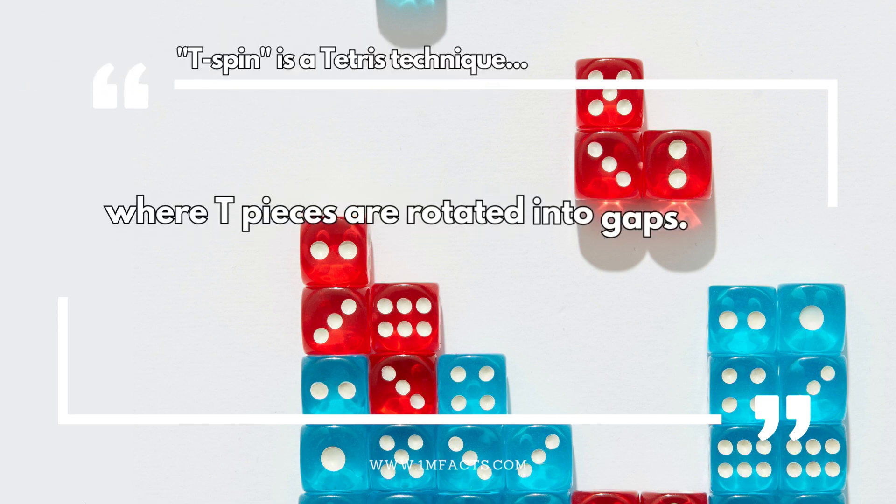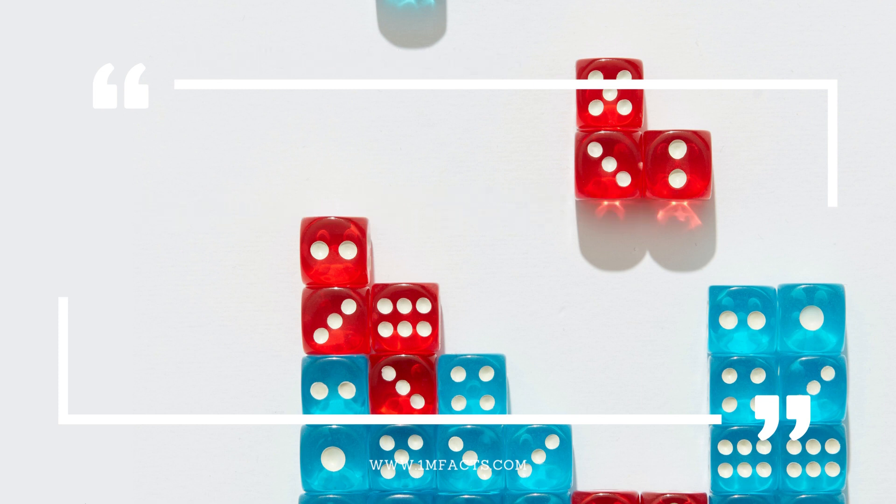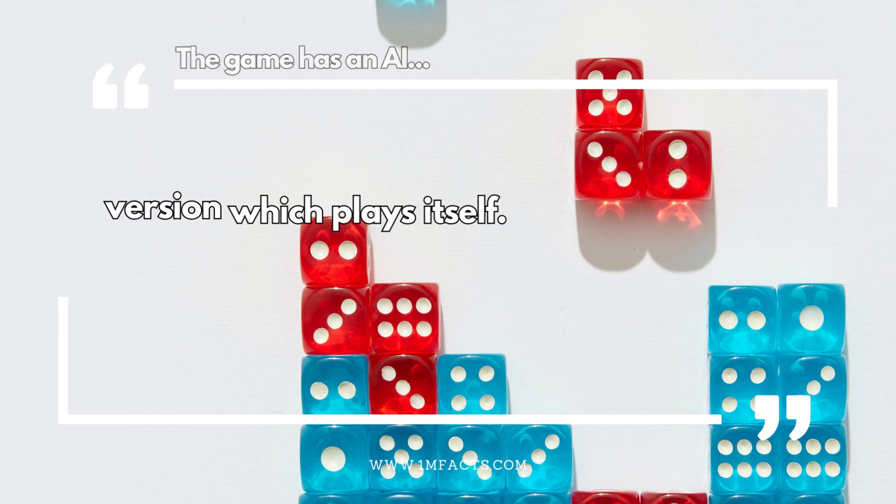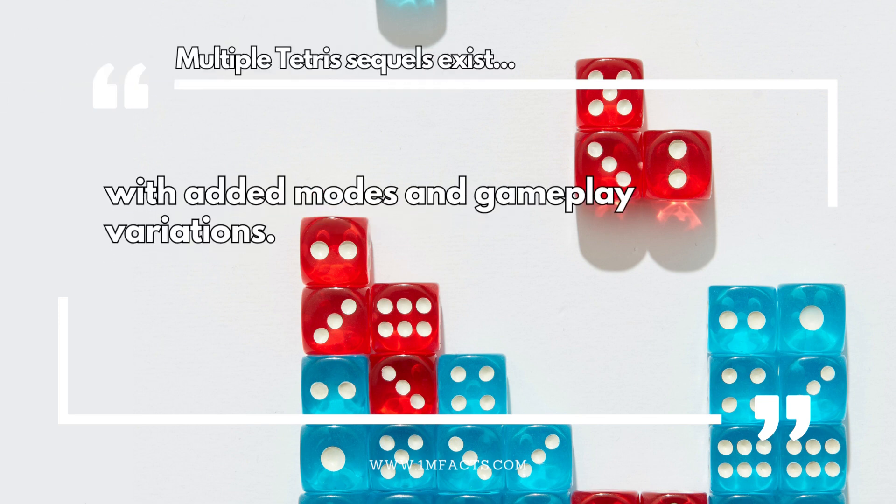T-Spin is a Tetris technique where T pieces are rotated into gaps. The game has an AI version which plays itself. Multiple Tetris sequels exist with added modes and gameplay variations.